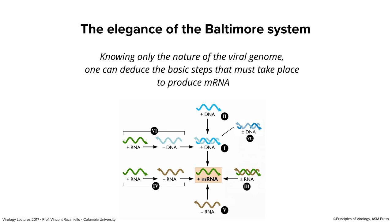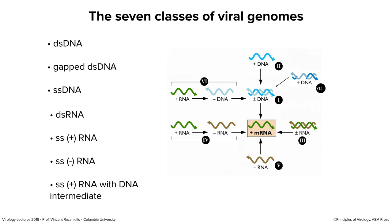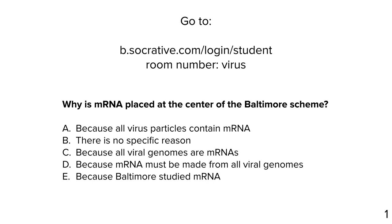Here are the seven classes: double-stranded DNA, gapped double-stranded DNA — this is the one Baltimore didn't have in the 70s, discovered later — and single-stranded DNA. Those are the three DNAs. Then double-stranded RNA, single-stranded plus-sense RNA, single-stranded minus-sense RNA — three categories in each of DNA and RNA. For RNA viruses, we have an additional class: viruses with plus RNA that go through a DNA intermediate. This is one of those exceptions where the plus RNA in the virus particle, even though it's the same polarity as message, is not translated when it goes into the cell — it is copied to a DNA.